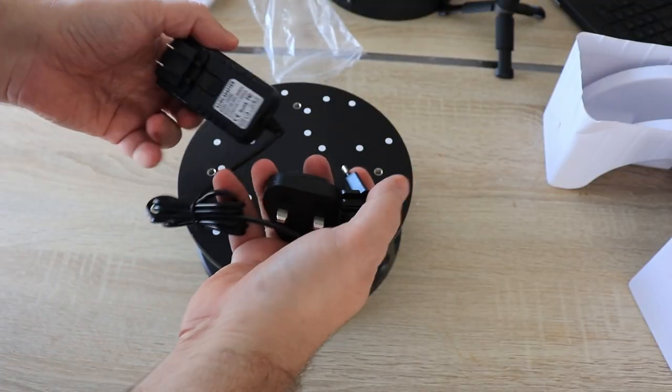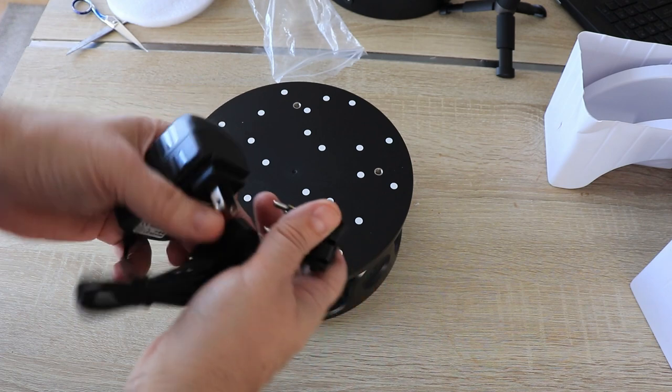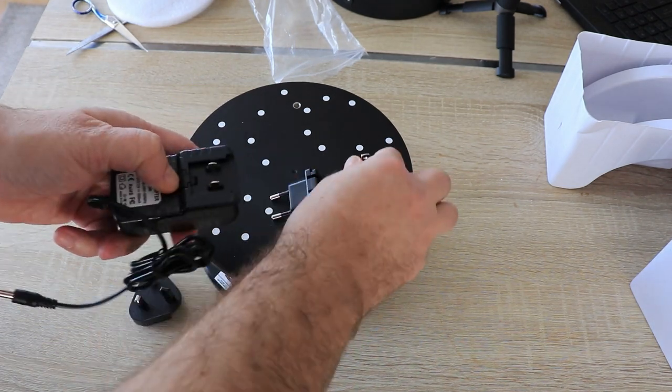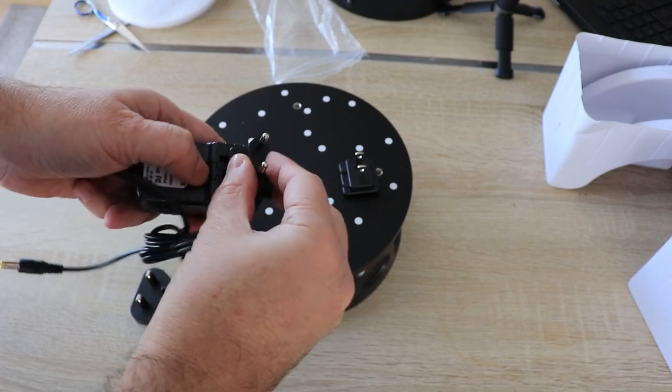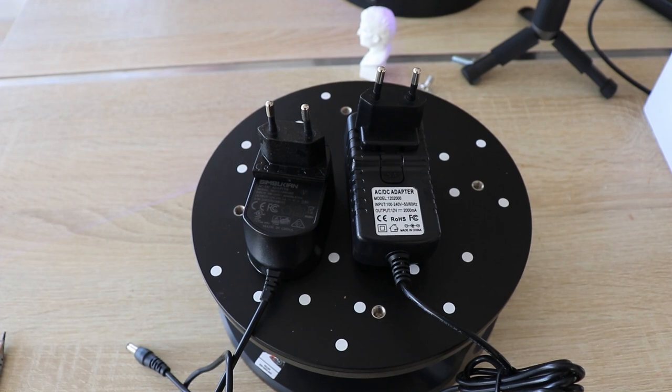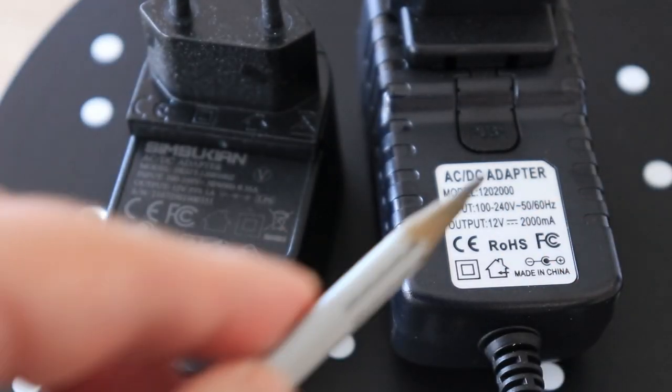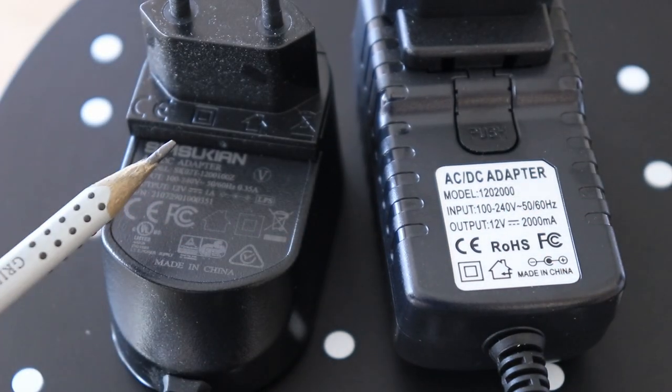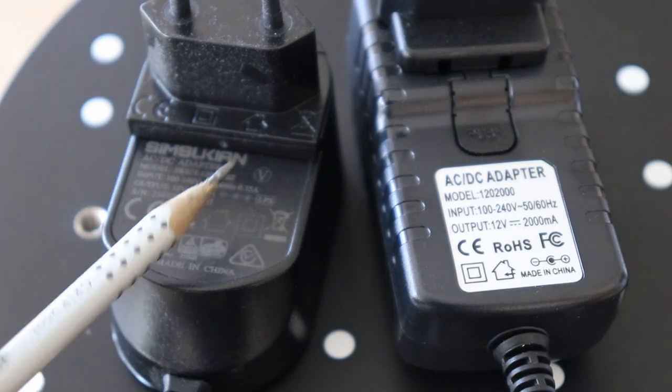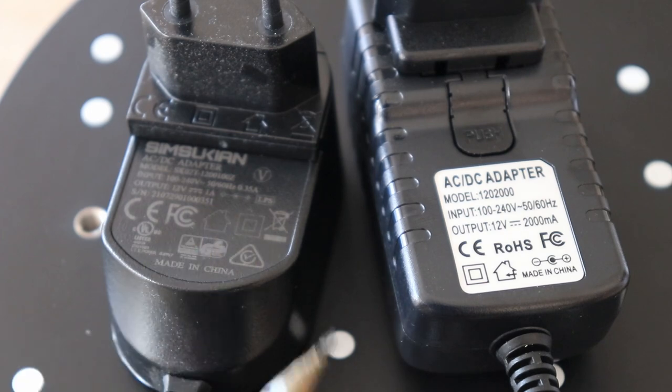And we also have this power supply unit. And I have to change, in my case I have to use this one. The new power adapter has the output of 12 volts and 2 amperes, until the old one for the old turntable has also the output of 12 volts but only 1 amp. So you cannot use this power adapter with the new turntable.